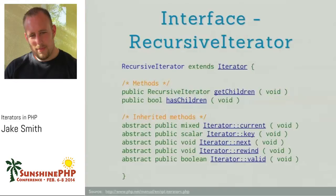One of the biggest benefits when using iterators is the recursive iterator. If you screw up recursion, it gets really messy really quick. Using recursive iterators is a huge benefit and really easy. The only two methods you have to add for RecursiveIterator are get children and has children — pretty obvious what they do. Does this element have any children? If so, get me the children.